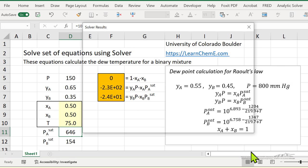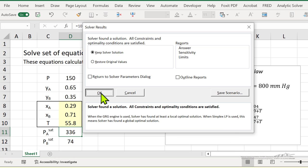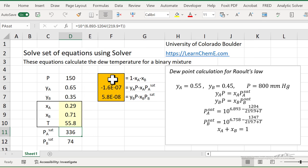So if we now hit solve, it quickly finds a solution. Notice now this cell is zero, and 10 to the minus seven, 10 to the minus eight is close enough to zero.